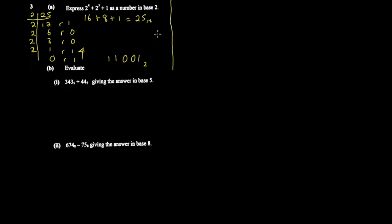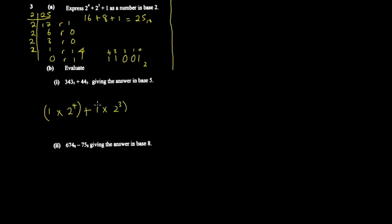Here's the faster method. To convert to base 10, you first assign levels: 0, 1, 2, 3, 4. Then you take each digit, multiply it by the base (2) raised to the power of its label. So: 1 times 2 to the power 4, plus 1 times 2 to the power 3, plus 0 times 2 to the power 2, plus 0 times 2 to the power 1.